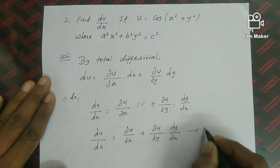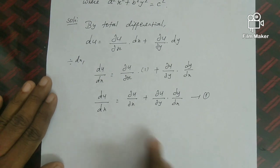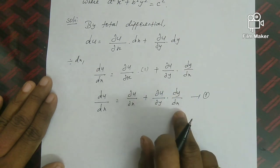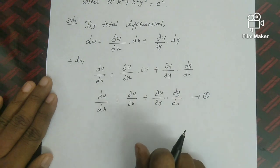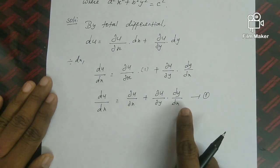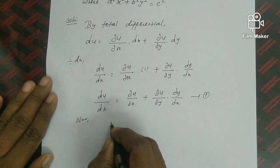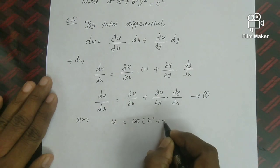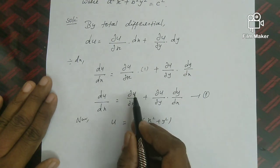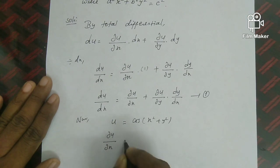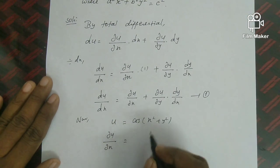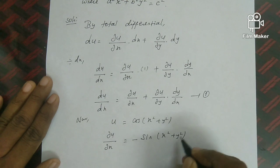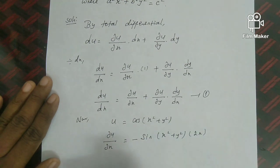This is the key equation. Now for u = cos(x² + y²), we find ∂u/∂x: differentiating cos gives −sin, so ∂u/∂x = −sin(x² + y²)·2x (since y² is constant, its derivative is 0). Similarly, ∂u/∂y = −sin(x² + y²)·2y (since x² is constant).